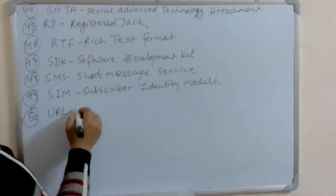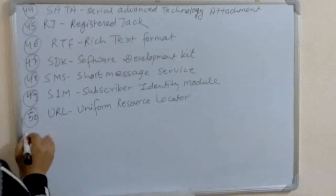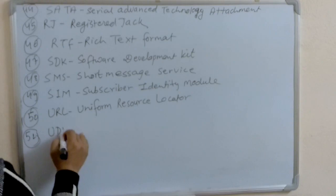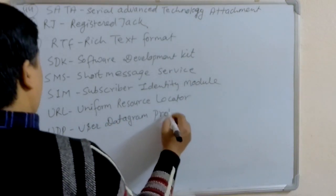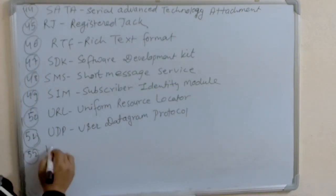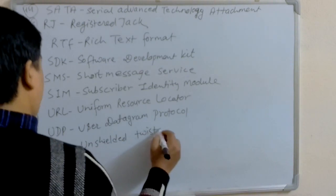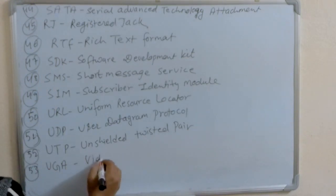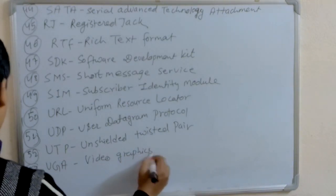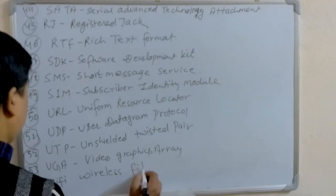URL: Uniform Resource Locator. UDP: User Datagram Protocol. UTP: Unshielded Twisted Pair. VGA: Video Graphics Array. WiFi: Wireless Fidelity.